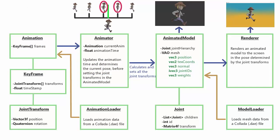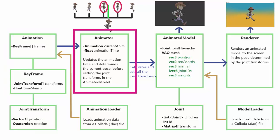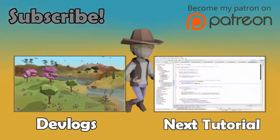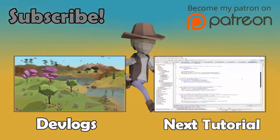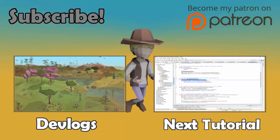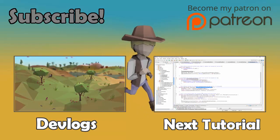That was all the code involved in representing an animated model and rendering it to the screen in a given pose. Next time we're going to look at the animation data structure and the animator class, and there'll be another tutorial after that covering the loaders in more detail. Thank you all very much for watching, do subscribe if you haven't already, have a wonderful week and I'll see you next time!